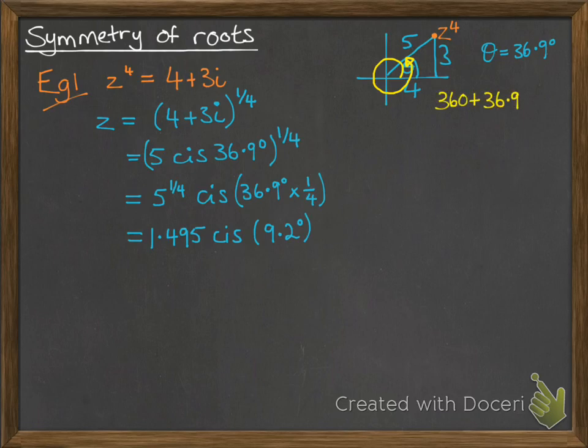So if we made the argument 360 plus 36.9, we would still get to the same spot, with a modulus of 5, but this time the argument would be equal to 396.9. And then we follow through the working, that gives us our second solution.